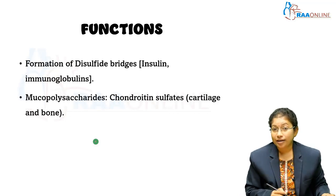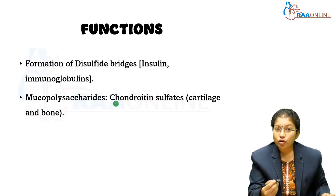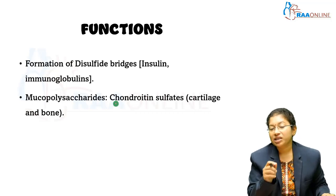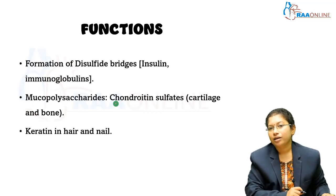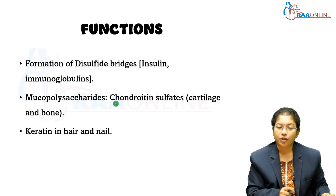The second function is the formation of mucopolysaccharides. Some of the mucopolysaccharides are sulphated, like chondroitin sulphate, which is present in cartilage and bone. The third important function involves keratin — keratin in your hair and nails is rich in sulphur.